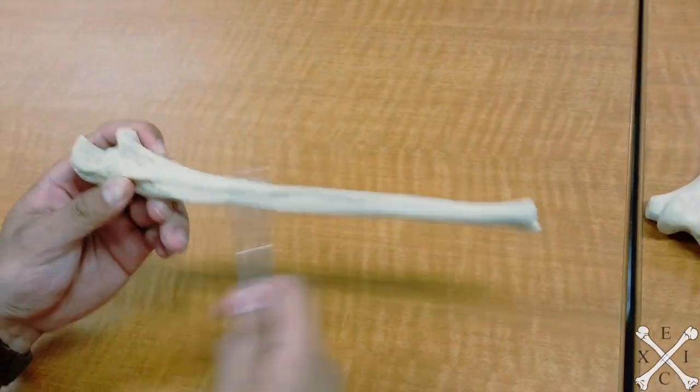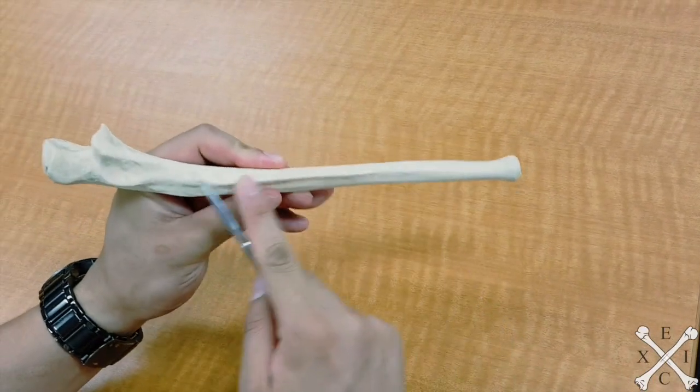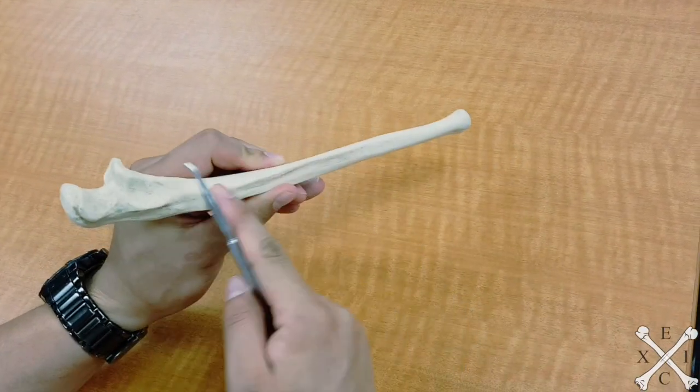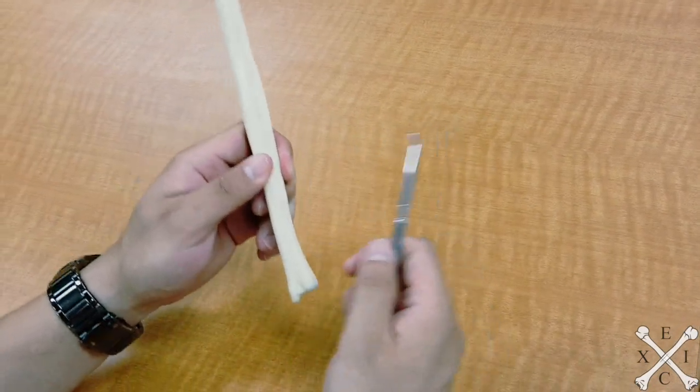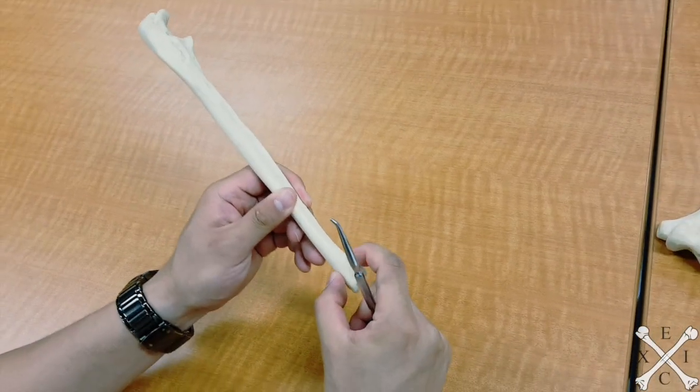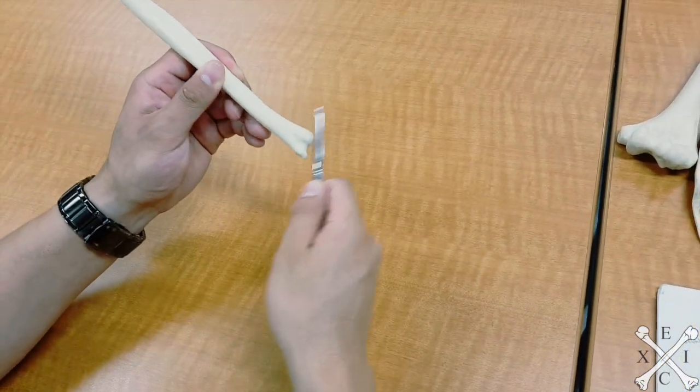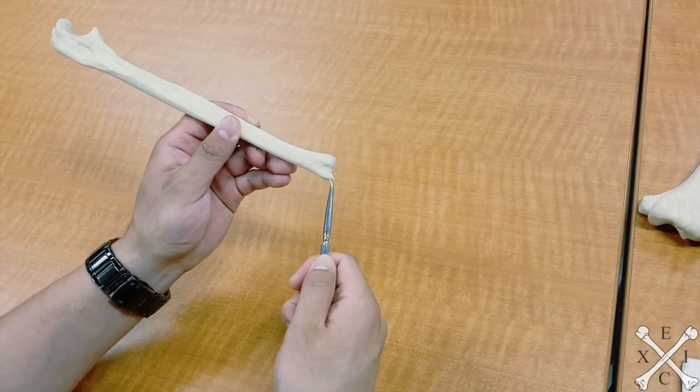Your interosseous margin or membrane is this part right here. The head of the ulna is not on the top, it's actually on the distal end of the bone which is right about here. And then finally we have the styloid process which is this part right there.